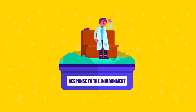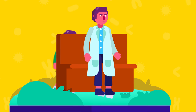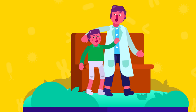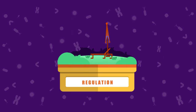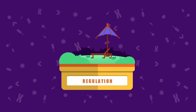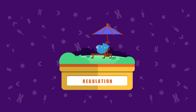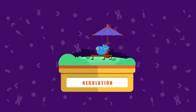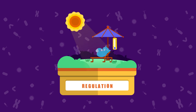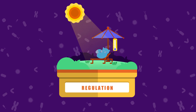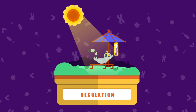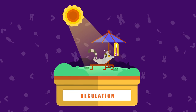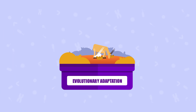The fifth characteristic is response to the environment — all organisms respond to environmental stimuli. This is why you laugh when you are tickled. The sixth is regulation — many types of mechanisms regulate an organism's internal environment, keeping it within limits that sustain life. This is also called homeostasis. For example, a lemur sunbathes to help raise its body temperature on cold mornings.